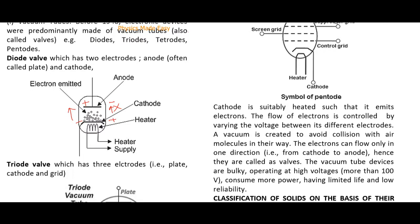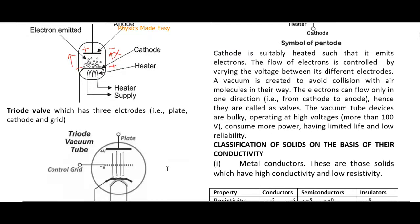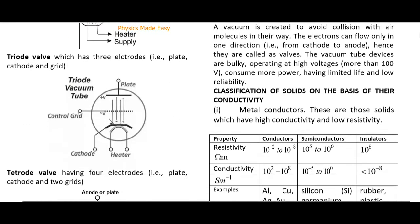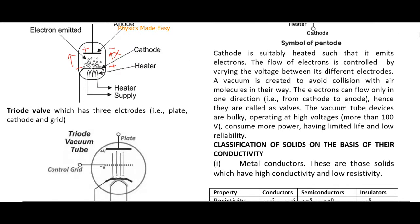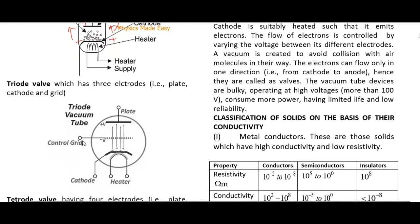Next is the triode, which has three electrodes. In the diode, the only element controlling electron flow was the comparative voltage of the anode and cathode. In the triode, a control grid is introduced as a second controlling element, and it is normally kept at a negative potential with respect to the anode.